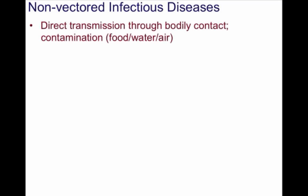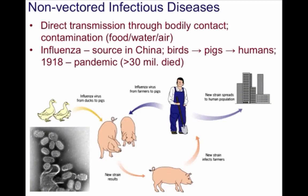Non-vectored infectious diseases are passed by direct transmission through bodily contact without vectors, contamination of food or water, or contamination of the air, such as through sneezing. Looking at influenza, its source is often in China due to the enormous reservoir of animals and people. It usually transmits from birds to pigs and then from pigs to humans, but the virus survives in the air long enough to be transmitted without vectors. Back in 1918, the worst pandemic in history resulted in more than 30 million people dying worldwide due to influenza.